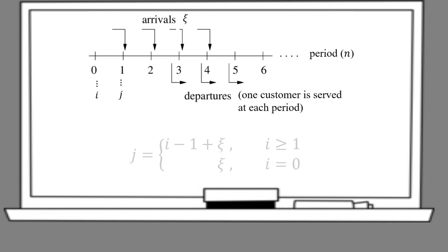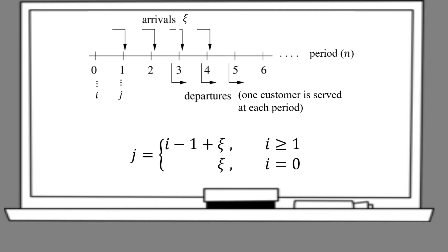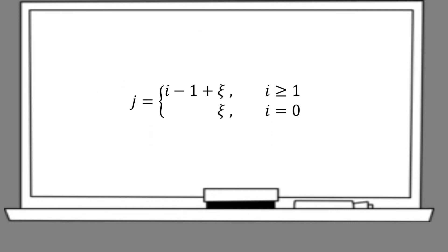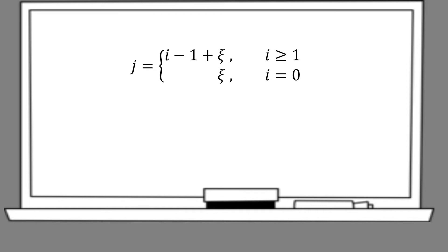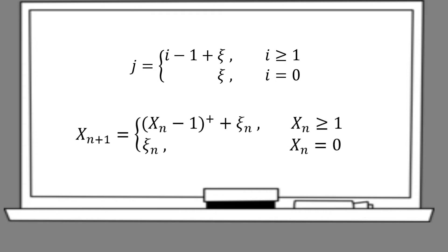At the start of each period, we call it the present state i, which indicates the current number of customers waiting in line for service. After one period, we call it the future state j, which indicates the number of customers left in the waiting line after one customer is served and departs, plus the number of new customers that arrive, which we denote as psi. If there were no customers waiting in line during state i, then state j will only consist of the number of new arriving customers. From the expression of j, we can express it in terms of random variables.